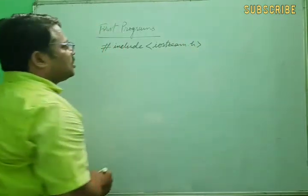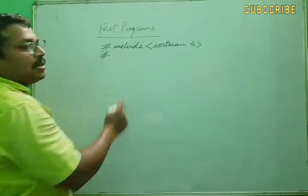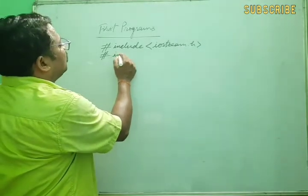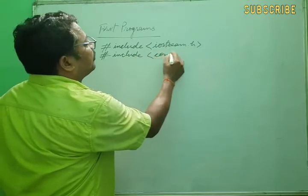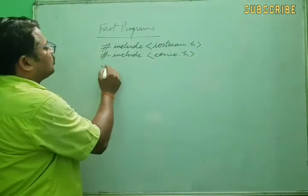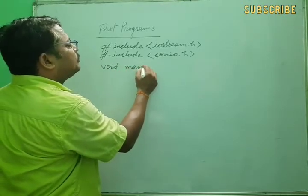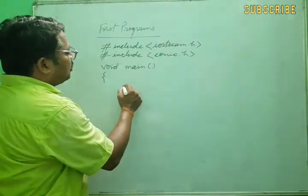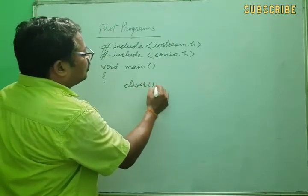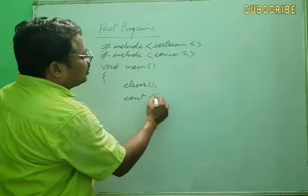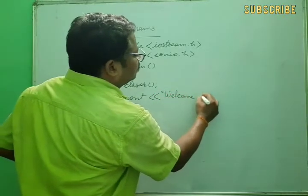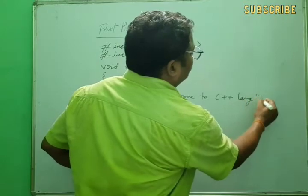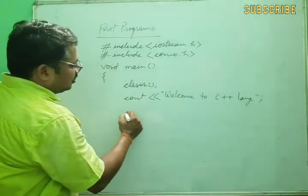Here we write iostream.h — this is a header file. I will discuss all things, but first understand what is written and its purpose. We also write conio.h. Suppose we have to display a message — we write clrscr, after that cout, and we give the message 'Welcome to C++'. And on another line we write another cout statement.